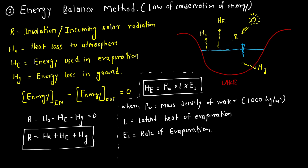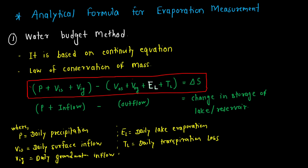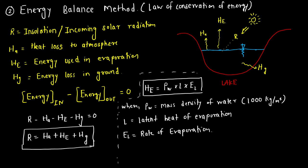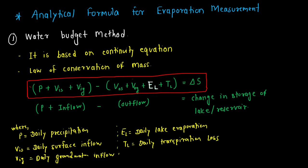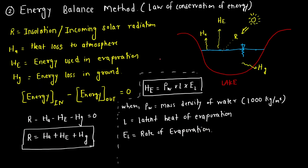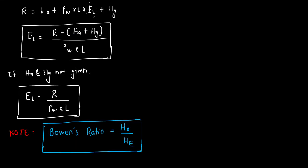Units will be provided in examination questions since these are analytical methods. Key exam points: the water budget method is based on the continuity equation and the law of conservation of mass, whereas the energy balance method is based on the law of conservation of energy. Bowen's ratio is also important.